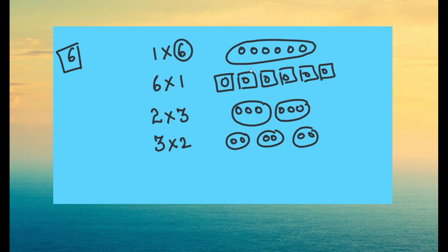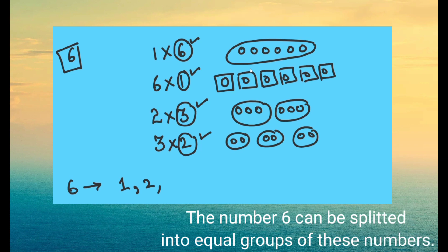So now all these numbers - six, one, three and two - they are the equal groups we have split it six into. So these are the factors of six. One, two, three and six. These are the factors of six.